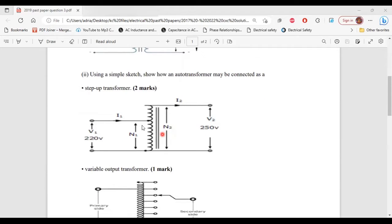Part 2 of B now, it says using a simple sketch show how an auto transformer may be connected as a step up transformer. Alright, so here we have an auto transformer. This is the primary side, and this is the secondary side. Now looking at the auto transformer, we can see that on the primary side, the number of turns is less, and on the secondary side, the number of turns is greater. So that tells us that this is a step up auto transformer.